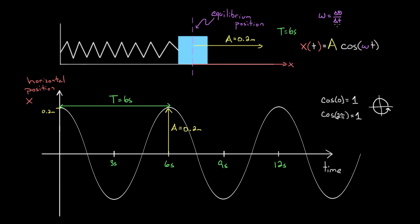You might think angular velocity isn't relevant here, because this mass is just going back and forth—it isn't actually rotating in a circle. However, you can represent repeating cyclic processes on a unit circle. So at t equals zero, we pulled this mass back and let go—we start right here on the unit circle.